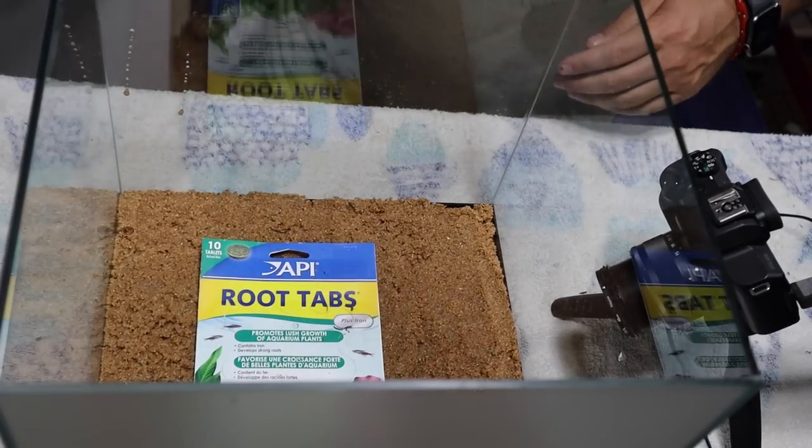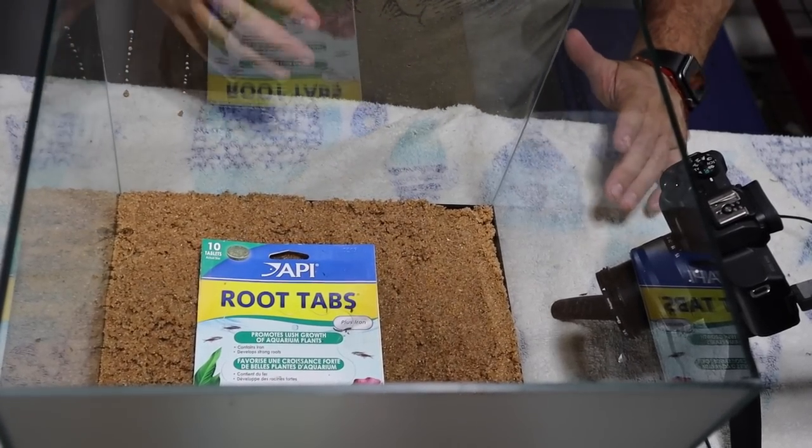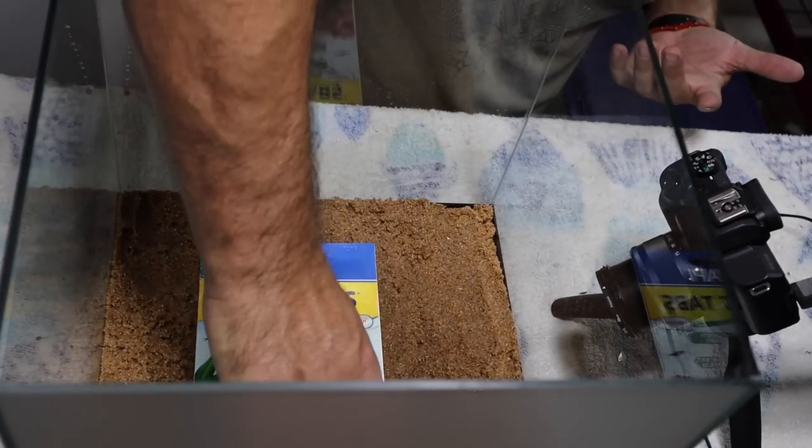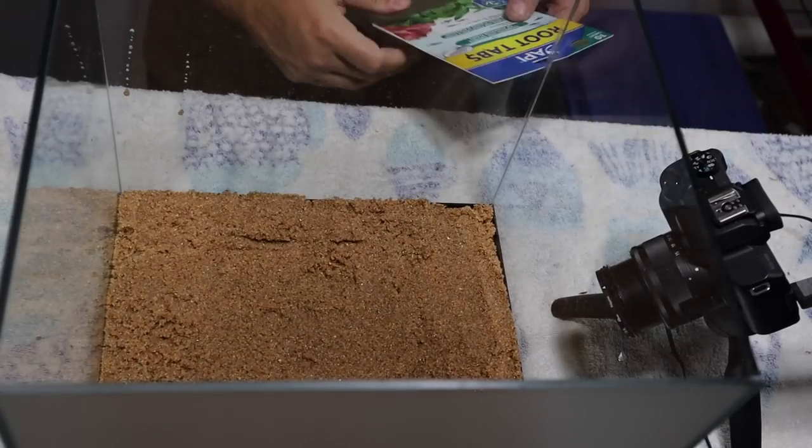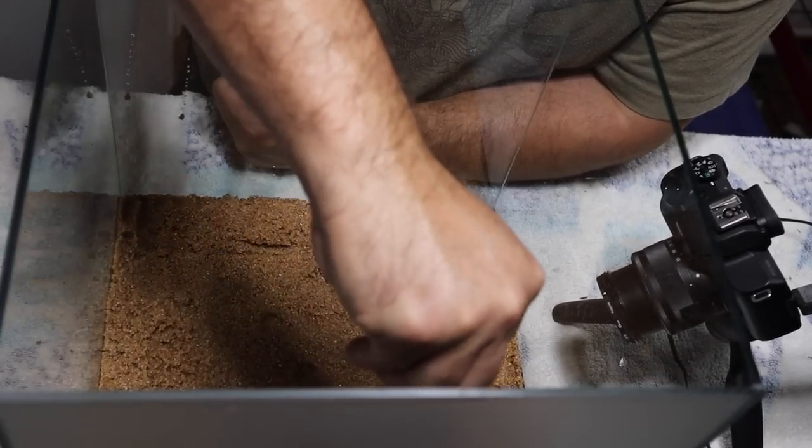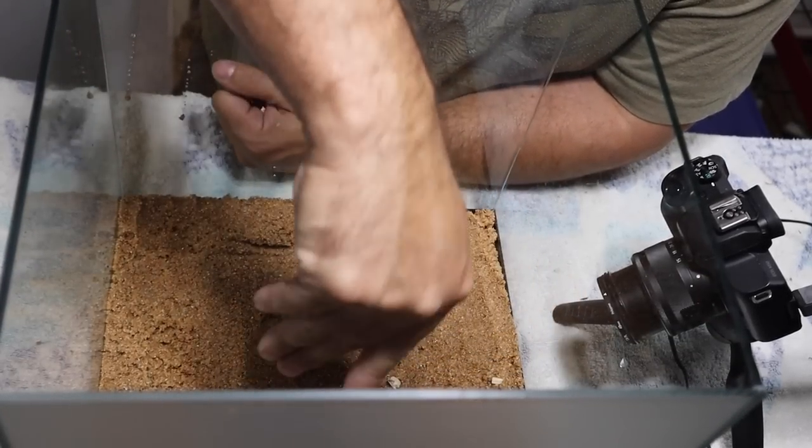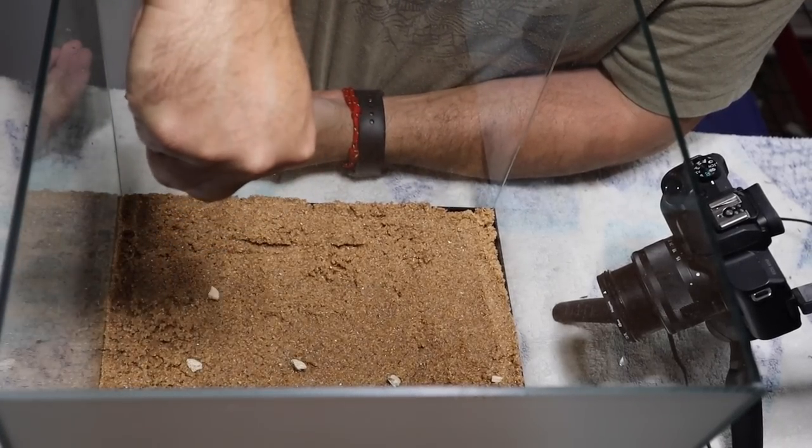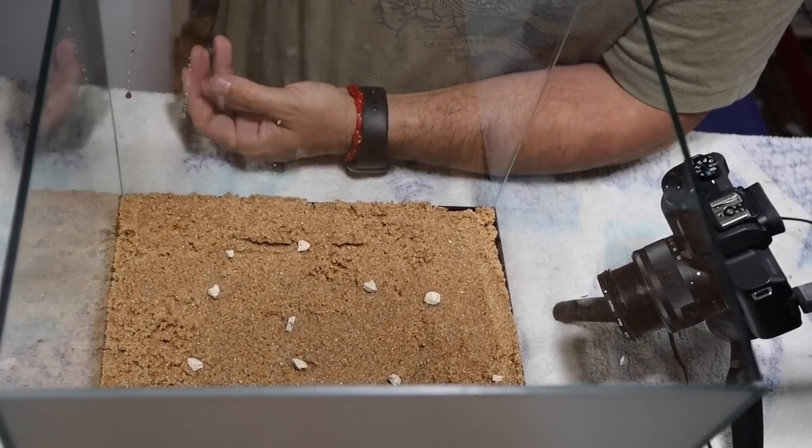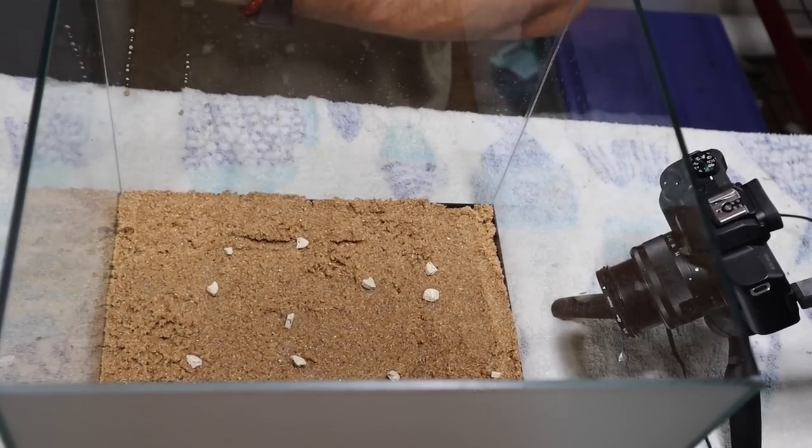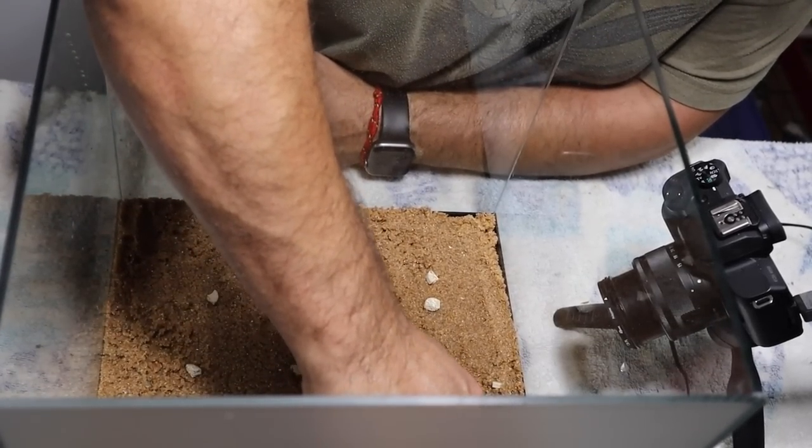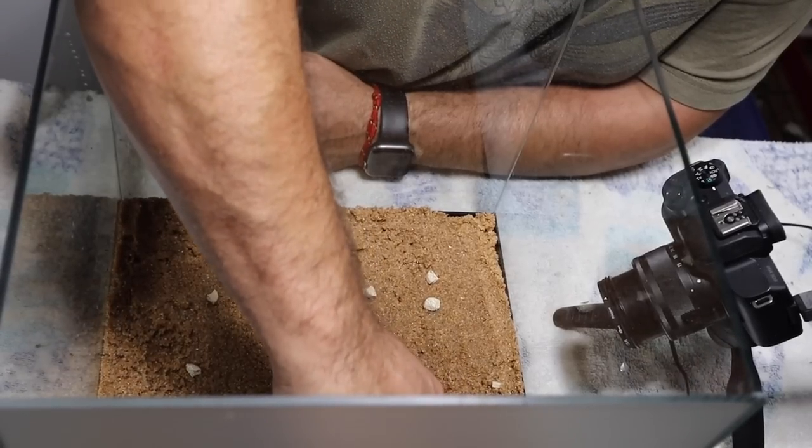Now I will tell you, we will be using a lot of different products from API today, number one starting with some API root tabs. Now you don't put them in like this because that would just be terrible. What we're going to do is open up this package and we're going to put these into the sand. I broke these up into small little pieces, and we're just going to place these ever so apart right here in the bottom of this tank because we will be in fact planting this tank.